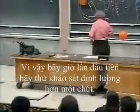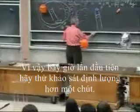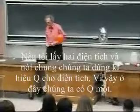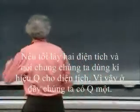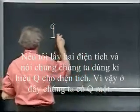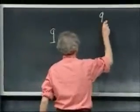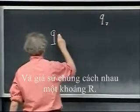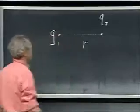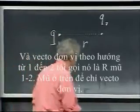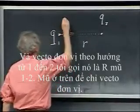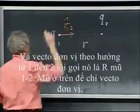So now let's try for the first time to be a little bit more quantitative. If I take two charges — we use in general the symbol Q for charge — so here we have Q1 and here we have Q2, and let's say they are separated by a distance r. The unit vector in the direction from one to two, I call that r-hat one-two. The roof stands for unit vector.